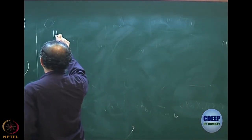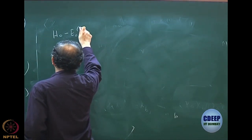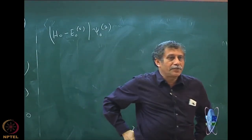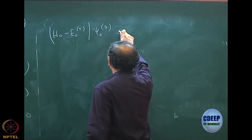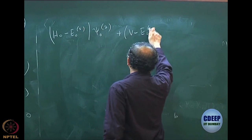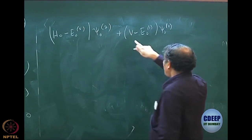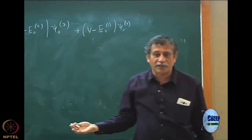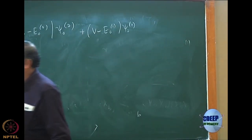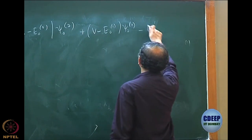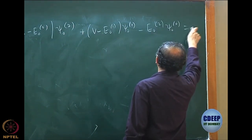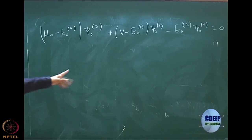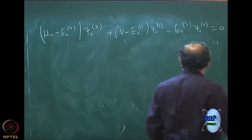Continuing this, we can write the second order equation: (H0 − E^(0,0)) psi^(0,2) plus (V − E^(0,1)) psi^(0,1) minus E^(0,2) psi^(0,0) = 0. Everything must be second order: terms come from 0×2, 1×1 contributions. H has no second order — only E^(0,0) does — so the last term is minus E^(0,2) psi^(0,0). Do not forget the minus sign because it is H minus E.